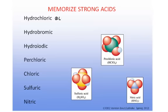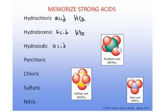Hydrochloric acid, hydrobromic acid, hydroiodic acid. These acids are hydrohalogen acids — hydrochloric is HCl, hydrobromic is HBr, and hydroiodic is HI. You need to memorize the name and the formula for each one of those acids, and recognize that they ionize 100% in water.